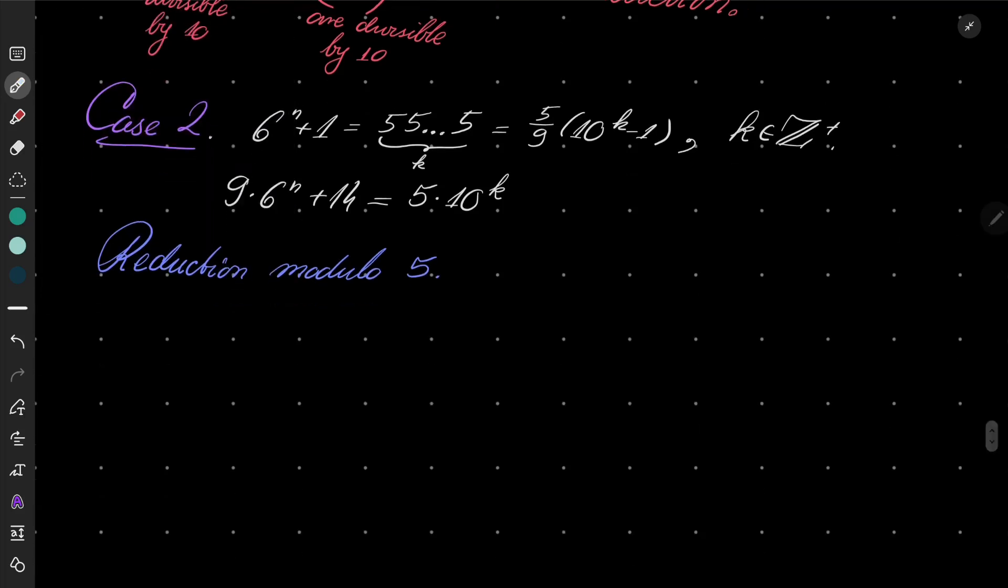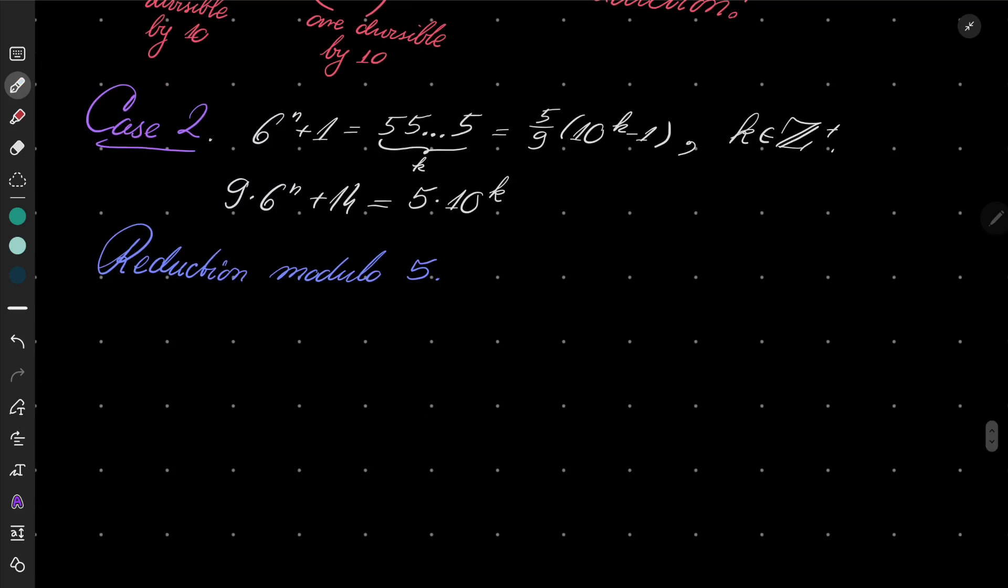Because what happens? Well, 6 is congruent to 1, so we have 9 plus 14 should be congruent to 0 modulo 5. In other words, it should be true that 23 is congruent to 0 modulo 5, which is obviously false. Contradiction, another contradiction.